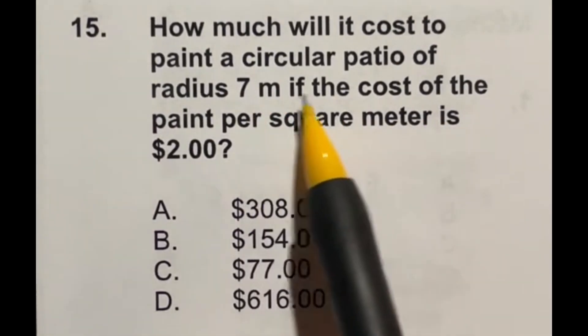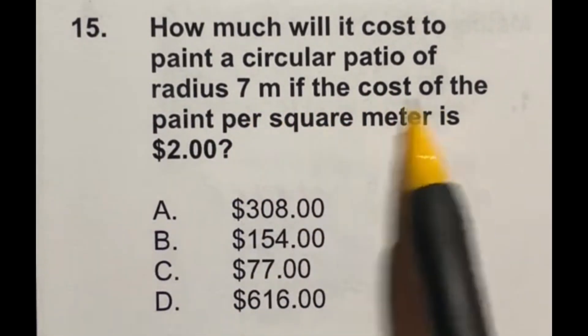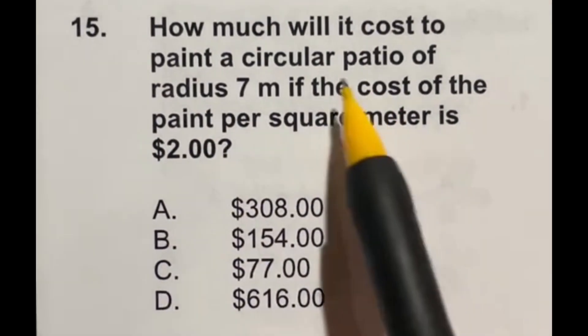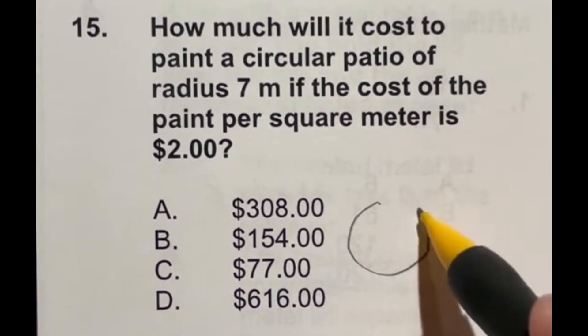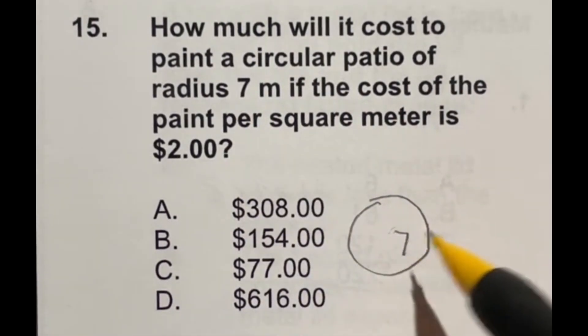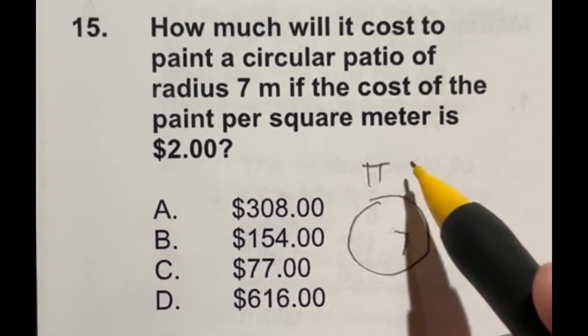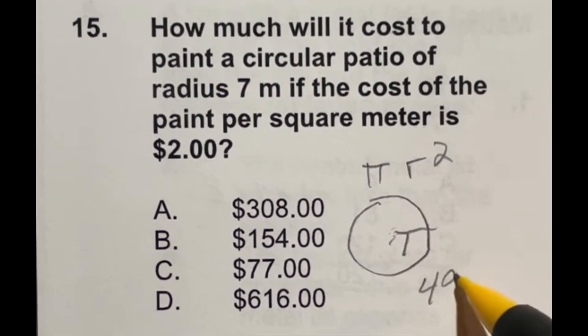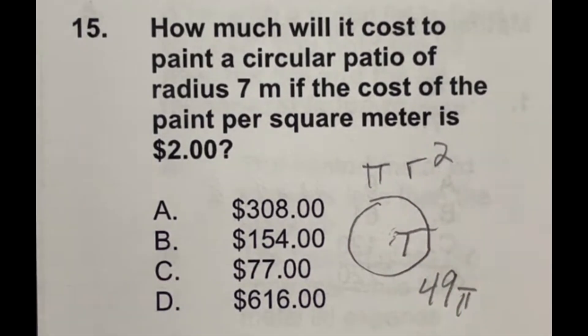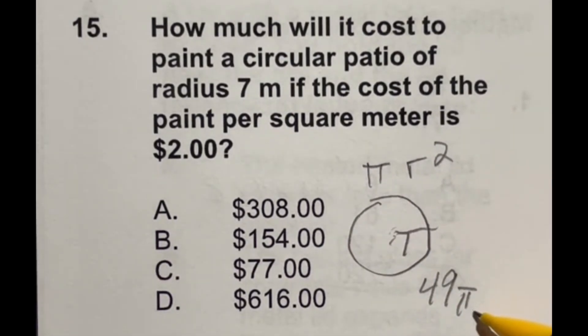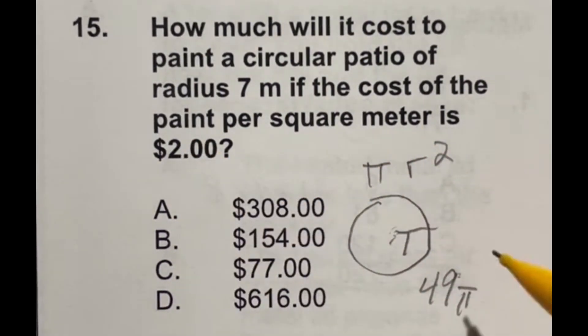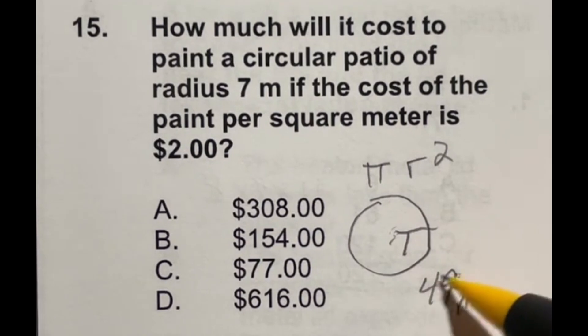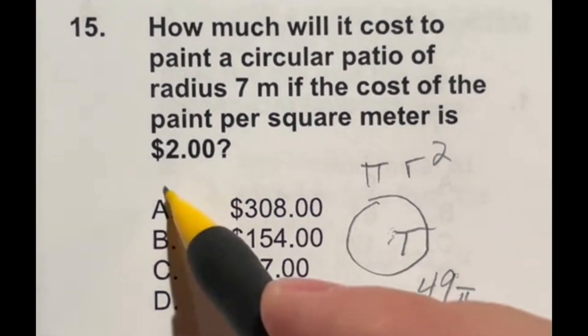How much will it cost to paint a circular patio of radius 7 meters if the cost of the paint per square meter is $2? So it says that we have a circular patio with a radius of 7. Well, we're looking at area here, and area is pi r squared. In this case, r is 7, they told us. So that means 7 squared is going to give me 49. Now, don't forget, we still have to multiply that by the pi right here. So that's essentially 3.14. So if I do 49 times 2, that's going to give me about $100 because of 50. And then we have to multiply that by 3. So that means we're looking at something that's a little bit larger than 100 times 3. And that looks like the only possible answer would be A.